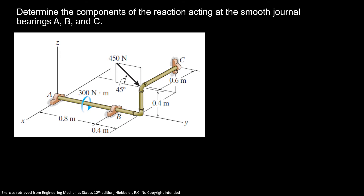Determine the components of the reaction acting at the smooth journal bearings A, B and C. So for our reactions, we have AX and AZ. For B, we have BX and BZ. And for C, we have CY and CZ. Now I'm going to find the components of my force F.